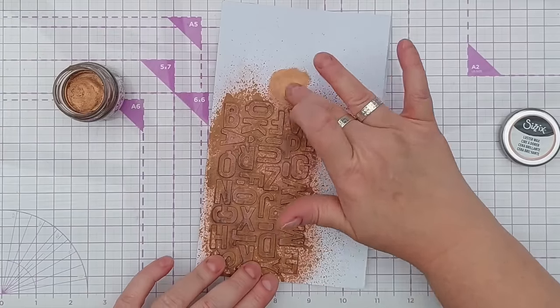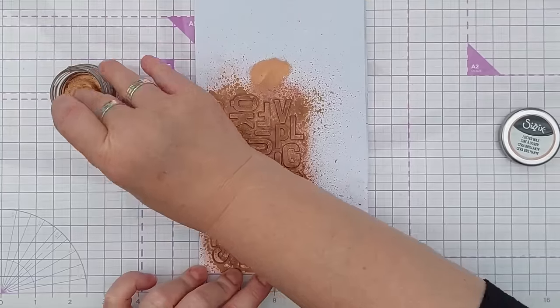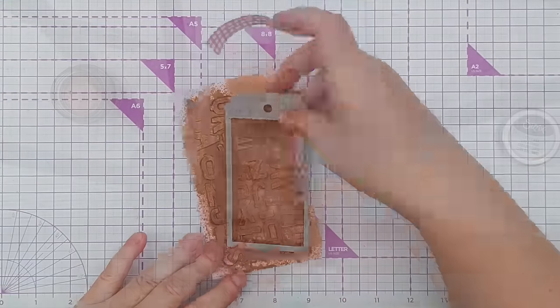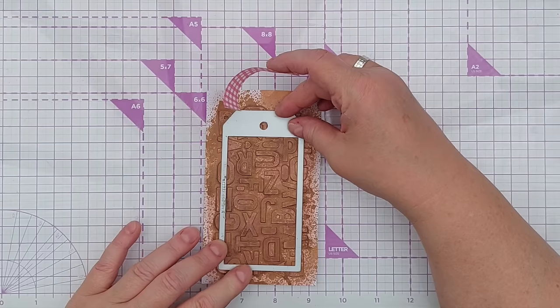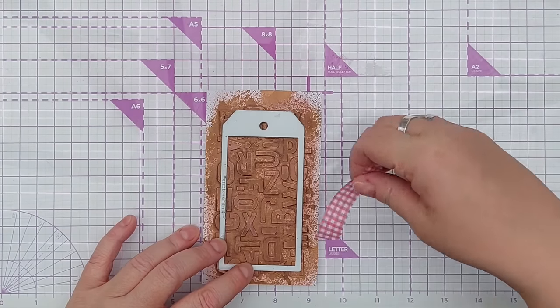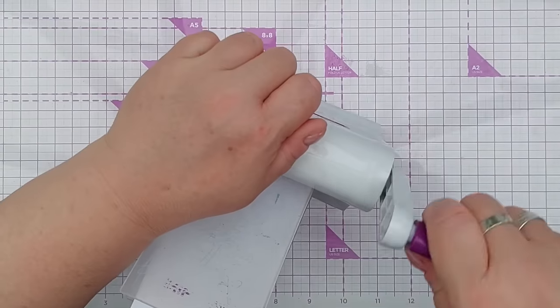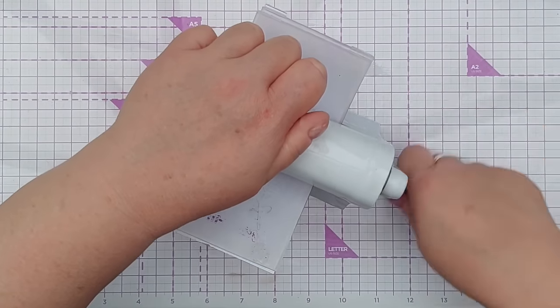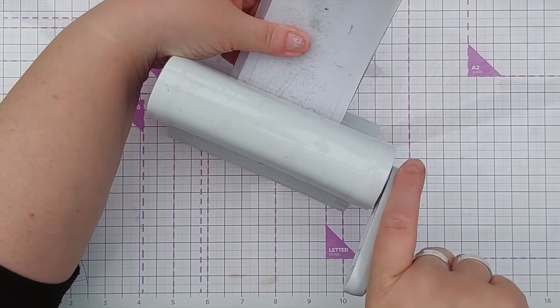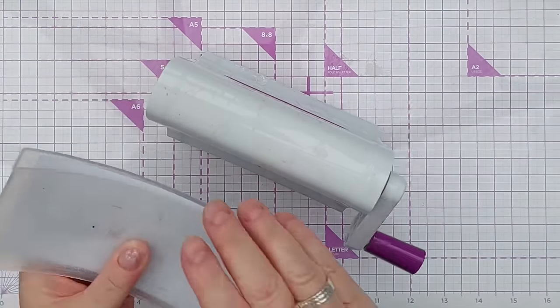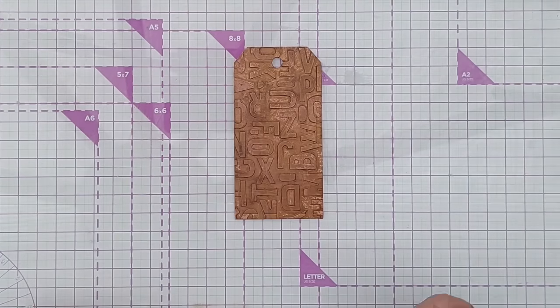So we are now ready to die cut our tag and pop it there so we get that cut off effect that I was talking about. And this is a technique that you could batch. You could, instead of making enough for one tag, you could make a whole sheet of A4 or whatever everybody else uses in the world and then cut lots of tags out of it.